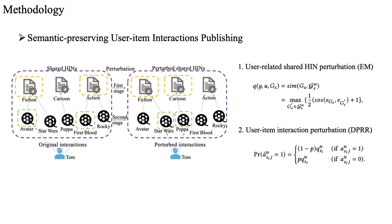Then we introduce a semantic-preserving user-interaction publishing algorithm to recover the broken semantics, the core of which is a two-stage perturbation mechanism. The first stage perturbs the user's high-order patterns from shared HINs by the exponential mechanism. To maintain utility, we select the shared HINs relevant to the user's true patterns with a higher probability.